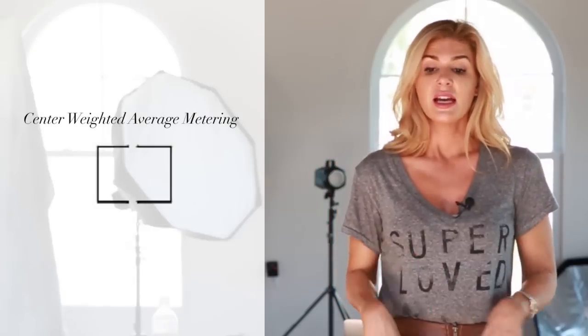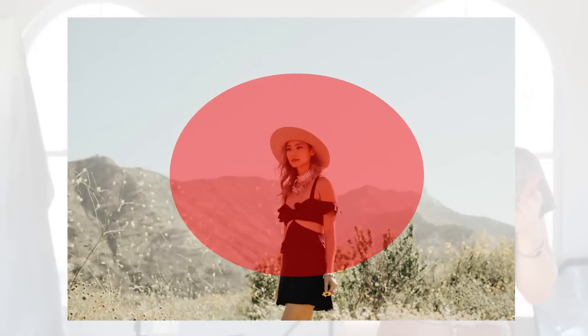Moving on to the second metering mode: center-weighted metering. That's pretty self-explanatory. What your camera is going to do when you have it on center-weighted metering is it's going to meter for the center of the image. So no matter where your focus is, your camera is metering off the center of the image. This is a pretty great mode to use, especially if you're shooting in a very photojournalistic setting — you may not have time to switch to spot or partial metering, so you go with center-weighted average metering.